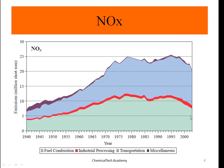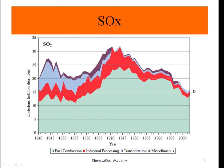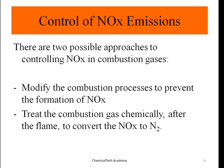For sulfur oxides, a similar chart shows different categories. The major anthropogenic source of sulfur oxide is fuel combustion. Transportation and miscellaneous contributions are approaching zero, and industrial processing is also small — fuel combustion remains the dominant source of SOx production.